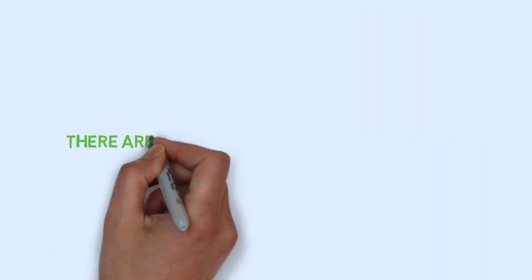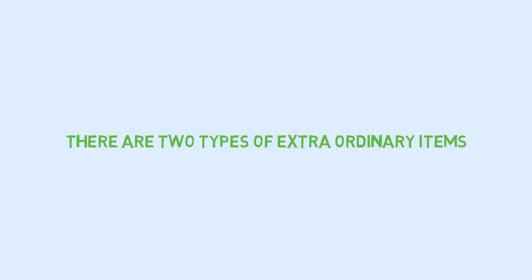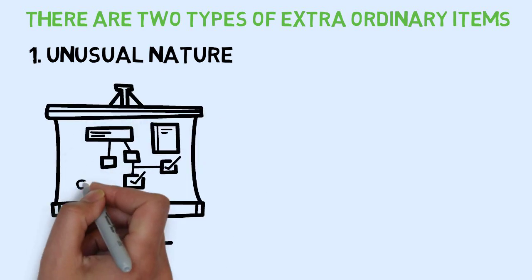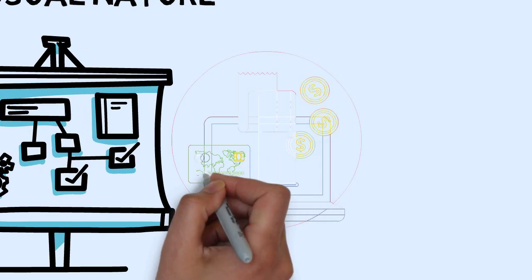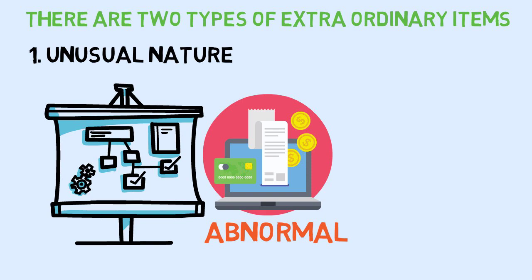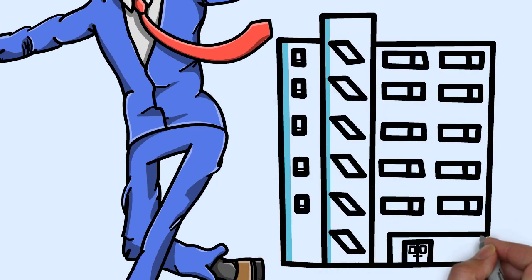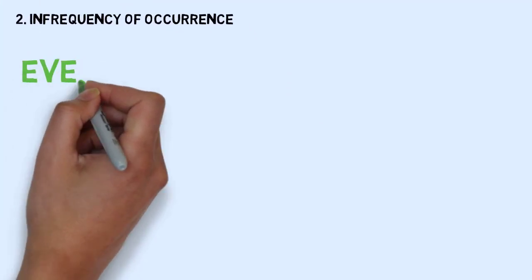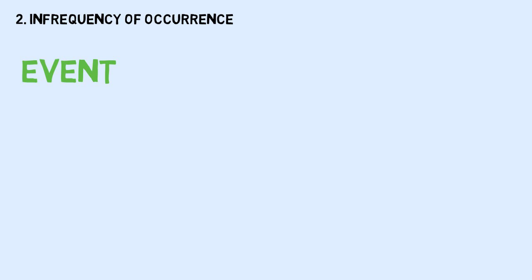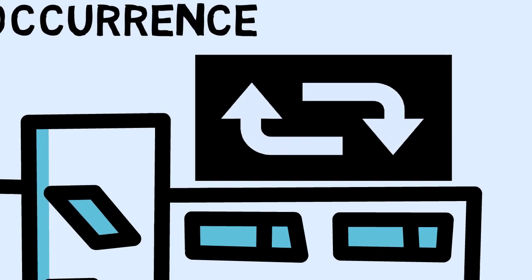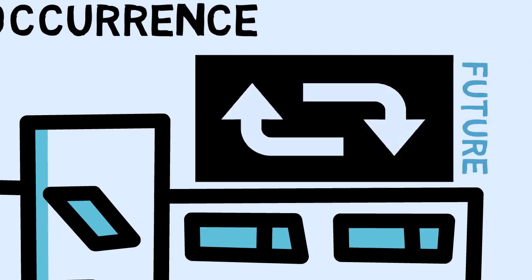Classification of Extraordinary Items — here are two types: 1. Unusual Nature: the event or transaction should be highly abnormal and clearly unrelated to the ordinary and typical activities of the company. 2. Infrequency of Occurrence: the event or transaction should be something the company does not reasonably expect to recur in the foreseeable future.